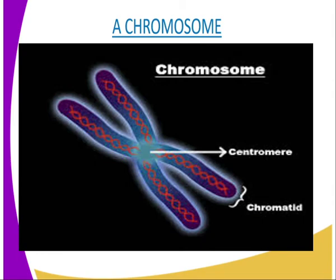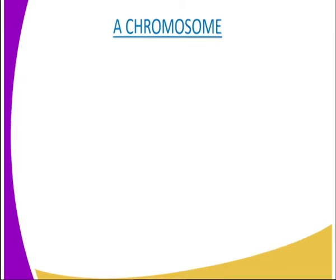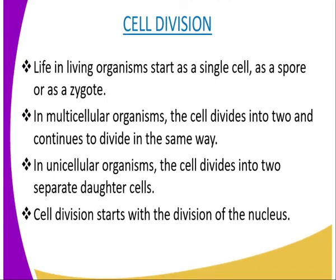Young cells of an organism divide actively and grow before they differentiate into tissues and organs. The ability of cells to divide is located in specific areas where the cells are unspecialized. These include the meristematic cambium cells, the meristematic apical cells in woody plants, and the Malpighian layer in mammalian skin. The sequence of events leading to cell division in plants and animals is basically the same.